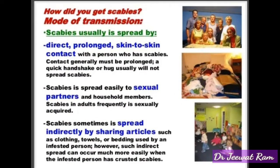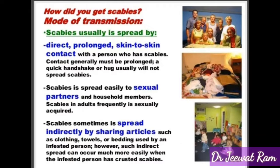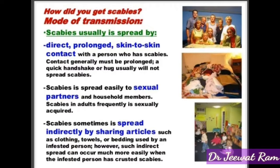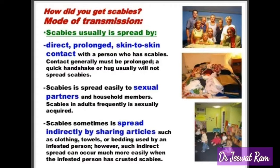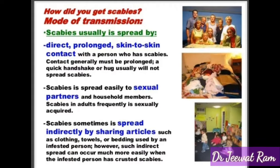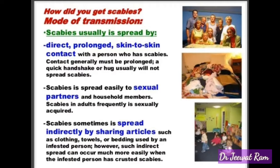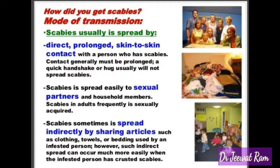How do you get scabies — mode of transmission? Scabies usually is spread by direct prolonged skin-to-skin contact with a person who has scabies. Contact generally must be prolonged; a quick handshake or hug usually will not spread scabies. Scabies is spread easily to sexual partners and household members. Scabies in adults frequently is sexually acquired.